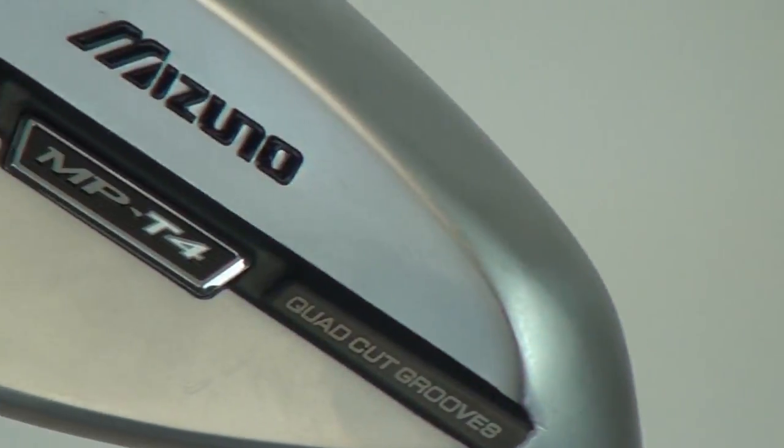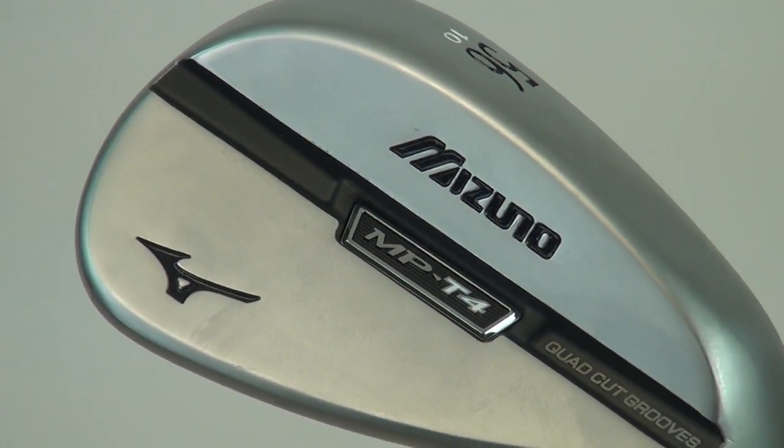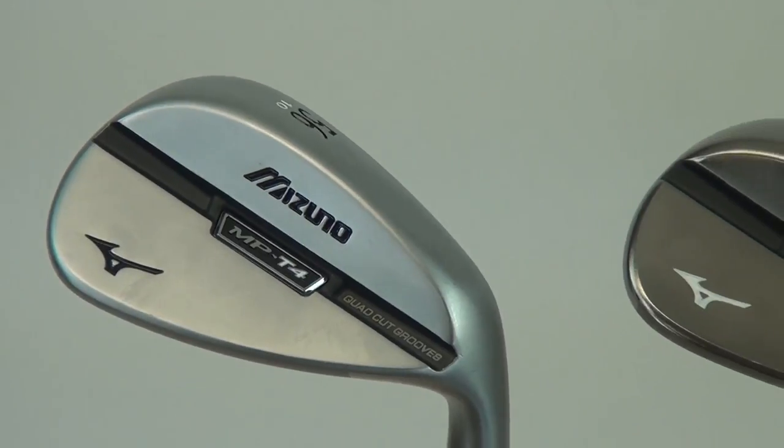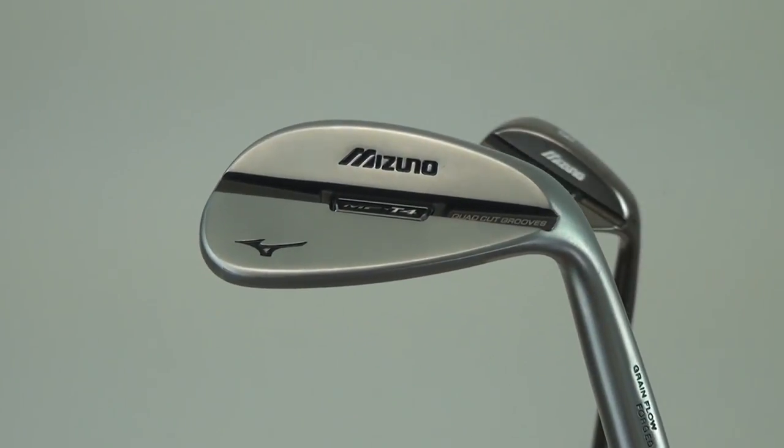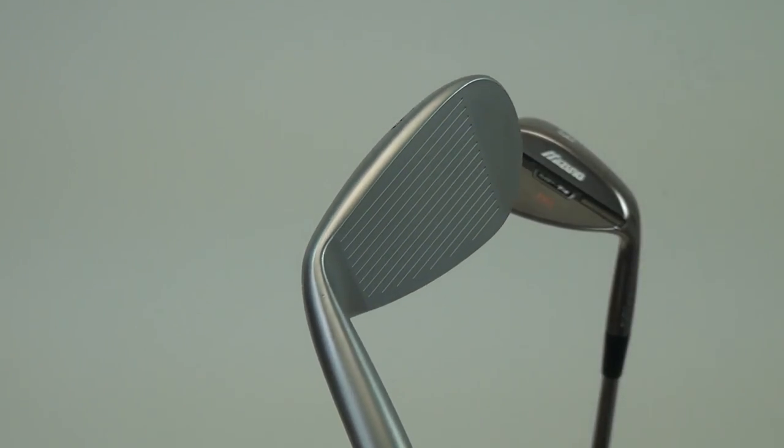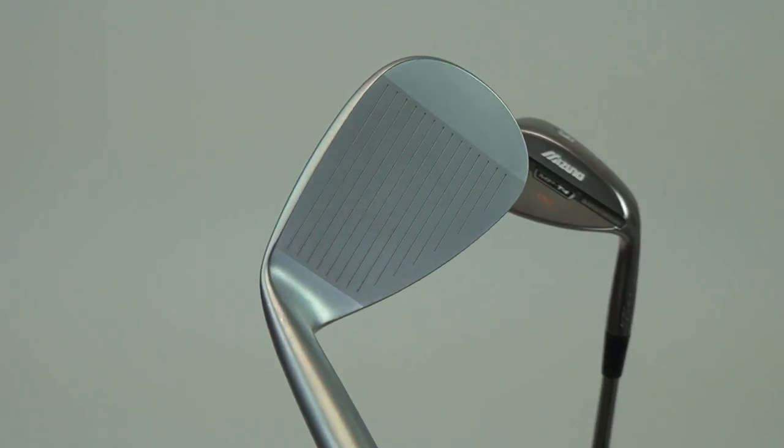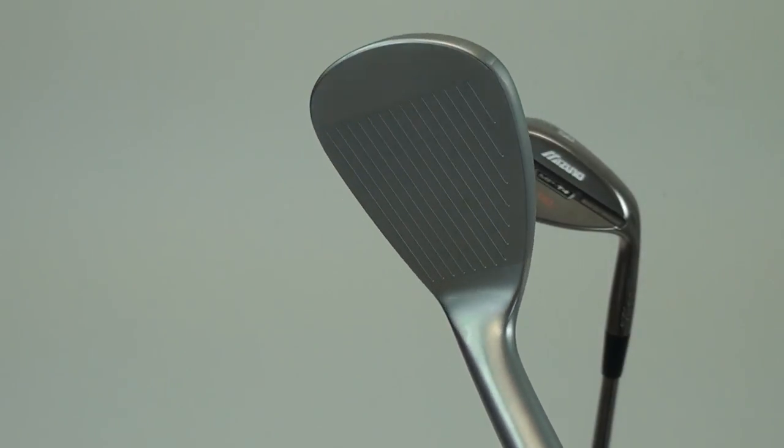One of the things we do in our wedges is in our 50 through 54 degree wedges, we use a narrower, deeper groove for more of the full shot wedge shots. And then in our 56 through 60 series, we'll use a shallower, wider groove to enhance spin for your touch shots.